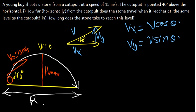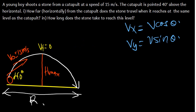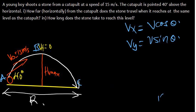Now we want to find the range. The range is given by Vx times t, where t is the total time the stone is in the air. To find the time, we split the trajectory: A is the launch point, B is the maximum height, and C is the landing point. The time from A to B equals the time from B to C, so the total time from A to C is twice the time from A to B.